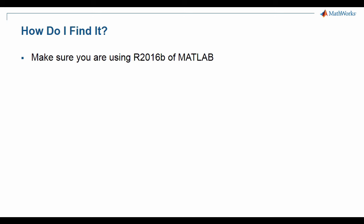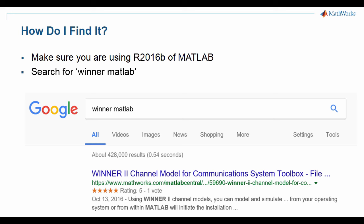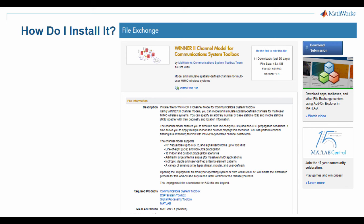You might ask yourself, how do I find this software? Well, the first thing to note is that this software is available starting with R2016B. The winner2 add-on will not work with previous versions of MATLAB. If you do have R2016B, then you can search for Winner MATLAB. When you do, you should see an entry that looks like this image. That's the one you want. So, you might also be asking yourself, how do I install the software? Well, once you click on the link, you will find yourself on the MATLAB file exchange page pictured here. This page gives you a two-paragraph description of the software, along with a list of system requirements. To download the software, you can click the download submission button on that page. That will launch your MATLAB and the installer for the Winner software.